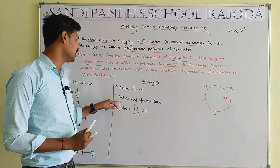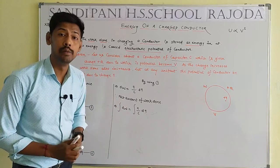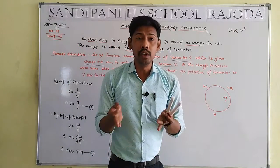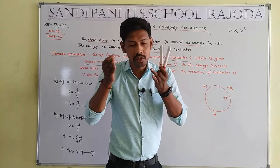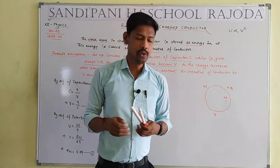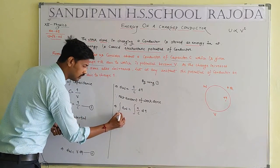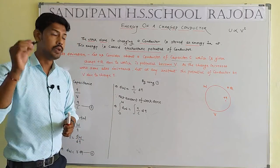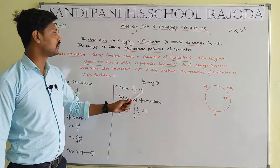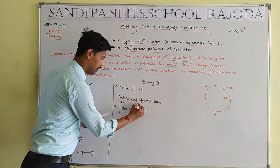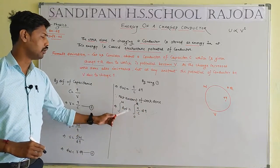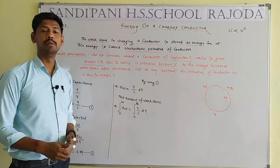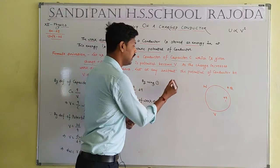In physics, integration has an initial value and a final value. At initial time, work done is zero because nothing has started yet, so initial W equals 0. Finally work done equals W. For dQ: initially charge equals 0, and finally charge equals positive Q. So limits for W are 0 to W, and for Q are 0 to Q.